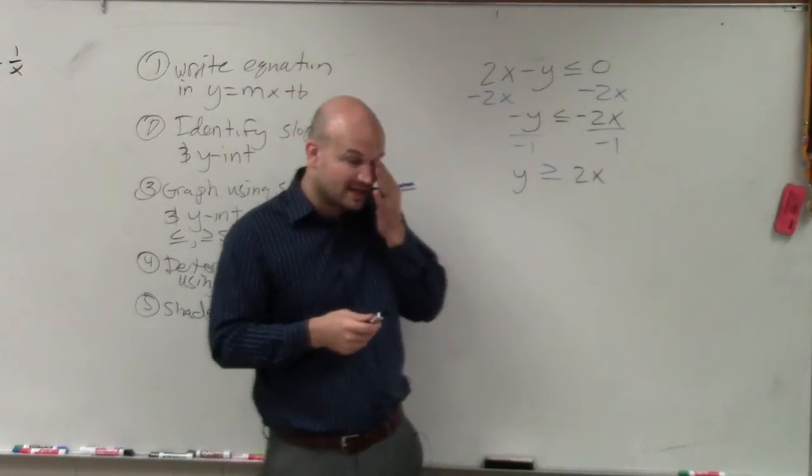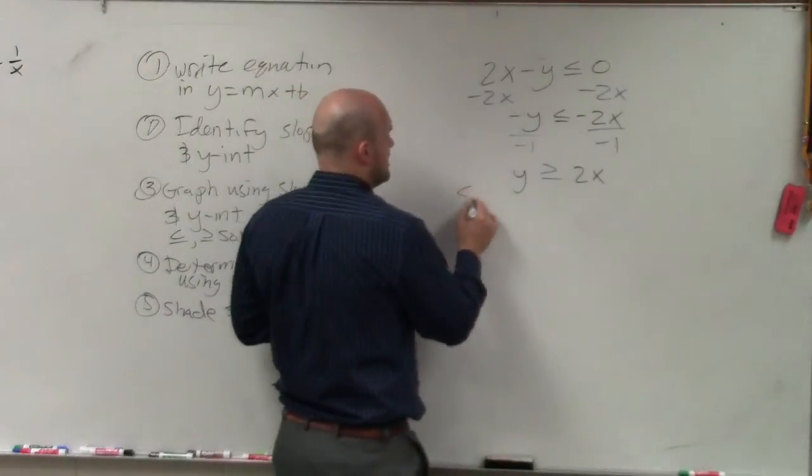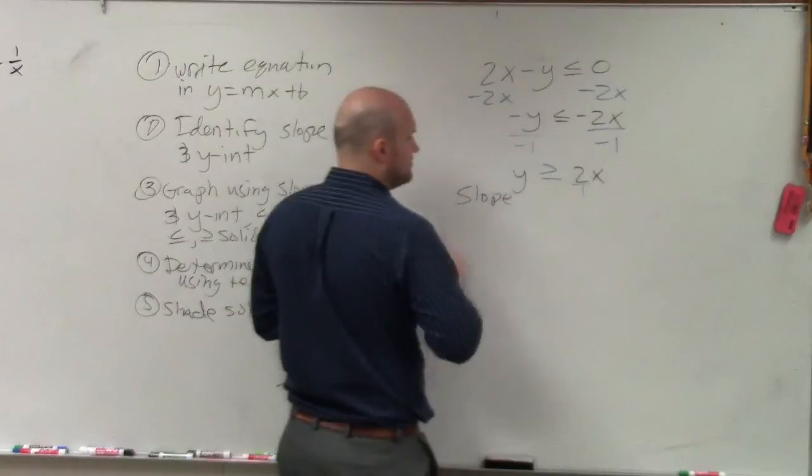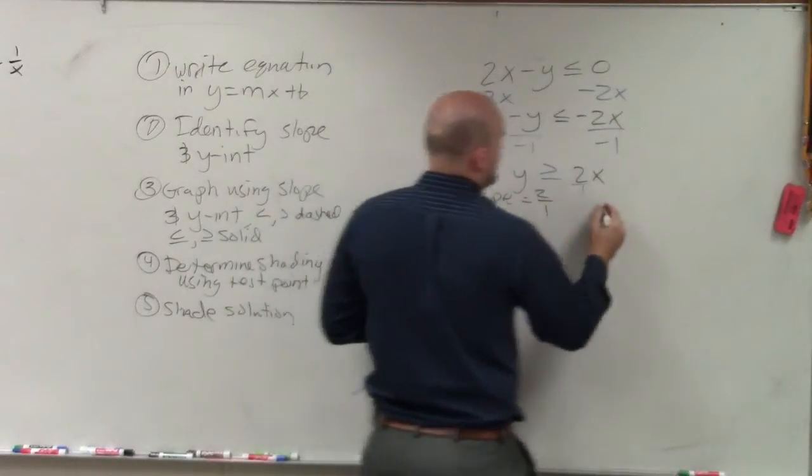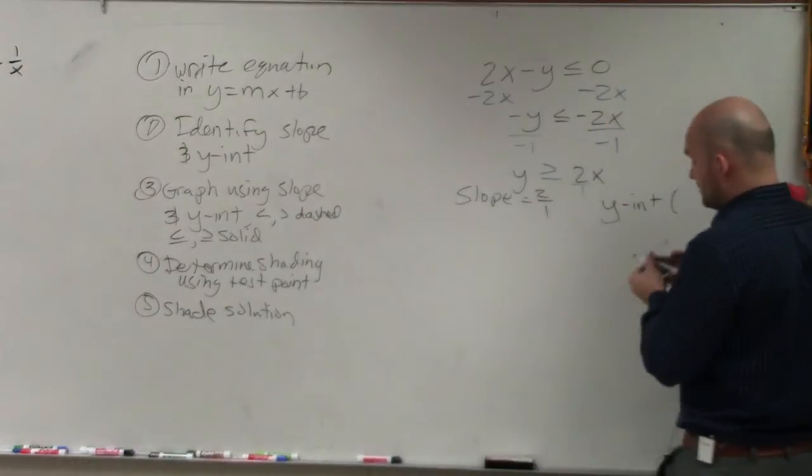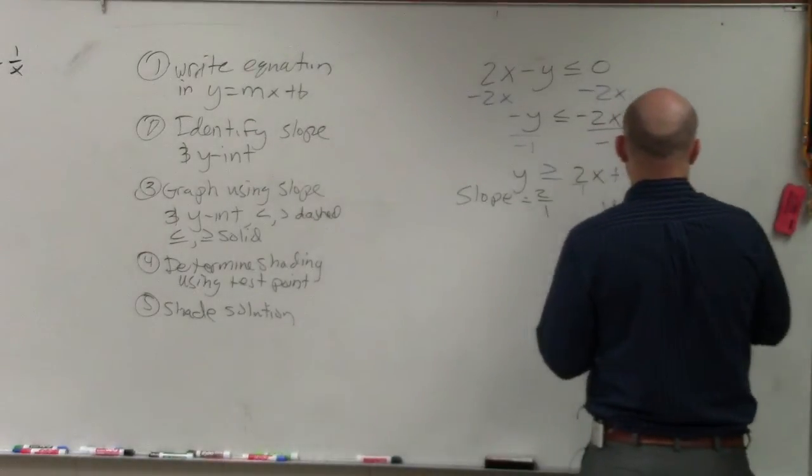Now we need to go ahead and graph. And again, we want to identify our slope and our y-intercept. When you have a whole number, I already did that last problem, write it as a fraction. Here, my y-intercept is not there, so we can always think of that as plus 0.